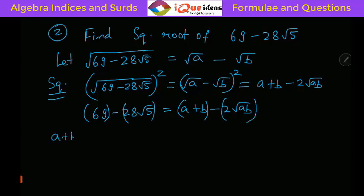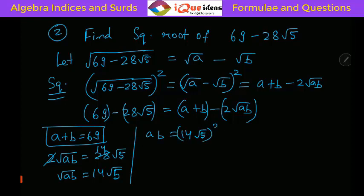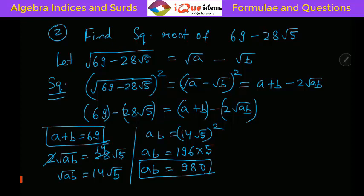So a + b = 69. Dividing 2√(ab) = 28√5 by 2 gives √(ab) = 14√5. Squaring: ab = (14√5)² = 196 × 5 = 980. We now have two equations: a + b = 69 and a × b = 980.